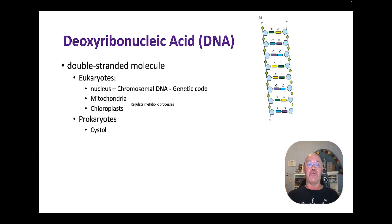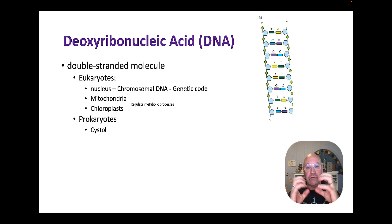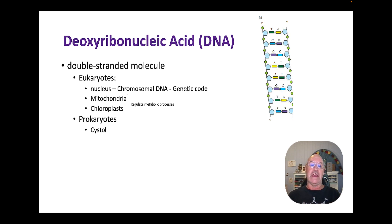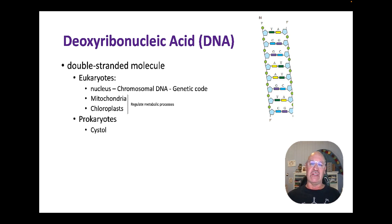DNA is deoxyribonucleic acid. It's a double-stranded molecule. In eukaryotes, we find it in the nucleus — that's the chromosomal DNA that holds the genetic code. DNA in eukaryotes is also found in the mitochondria and the chloroplast, and that's involved in regulating metabolic processes like photosynthesis and cellular respiration.